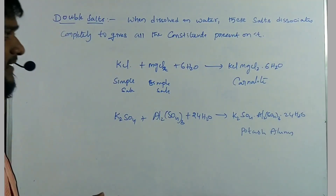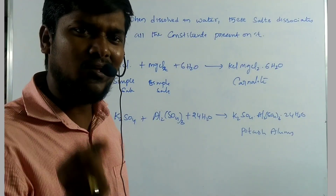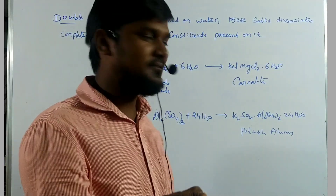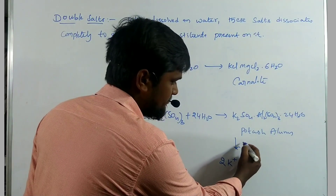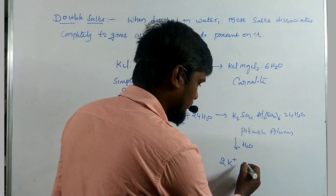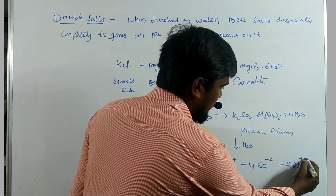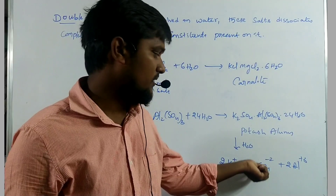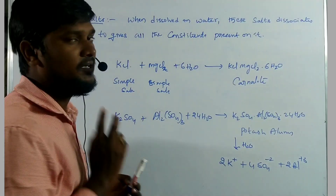The molar conductivity of such a double salt solution shows all the ions present in it. For example, it dissociates into 2 moles of potassium ions, 4 moles of sulfate ions, and 2 moles of Al³⁺ ions — showing all these cations and anions' molar conductance. That's why these salts are called double salts.